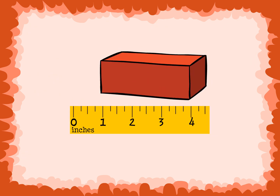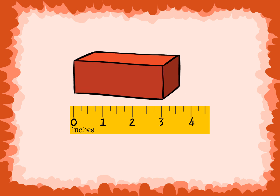This is not the correct way to measure the block — notice the placement of the block is not lined up with the end of the ruler. The measurement reads about four inches. This is the correct way to measure the block: the edge of the block is lined up with the end of the ruler, and the true measurement of the block is about three inches.